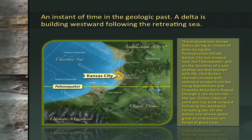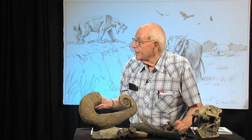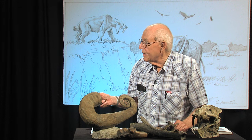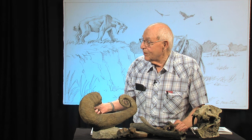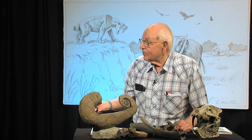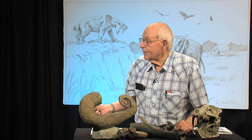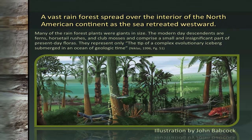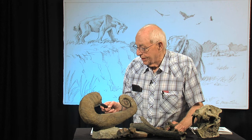At times these seas would retreat — they didn't stay here forever. Here's an instant of time in the geologic past: a delta is building westward following the retreating sea. Rivers are bringing in sand and clay, building deltas as the sea retreats. The headwaters for these rivers were in the rising Appalachian Mountains and in the Ouachita Mountains to the south. Here's Kansas City right here — Kansas City was on the equator, within five or ten degrees of the equator.